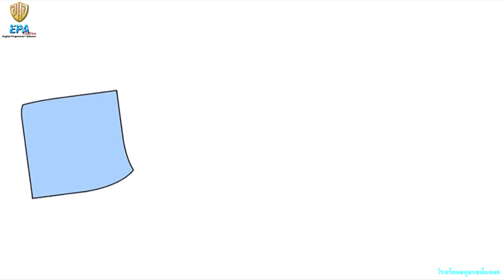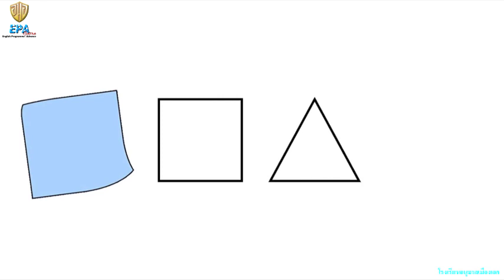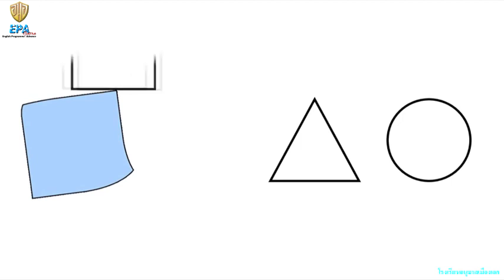This is a piece of paper. I want you to look at the shape of this paper and then observe these shapes: square, triangle, circle. What shape is similar to the paper? Is it square, triangle, or circle? Very good! It is the square.